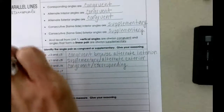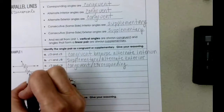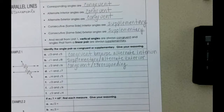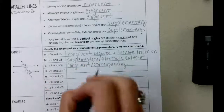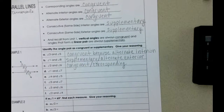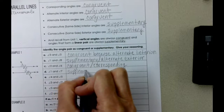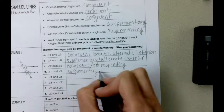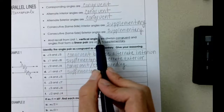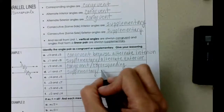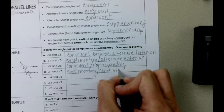Angle 1 and angle 7. Angle 1 is to the left and angle 7 is to the right, so they are alternate. They are outside of the parallel lines, so these are same-side exterior angles, and same-side exterior angles are supplementary. You might also call them consecutive exterior angles — they mean the same thing.